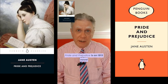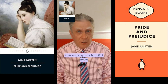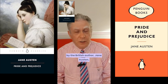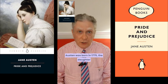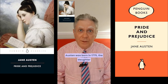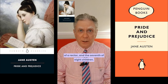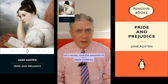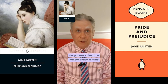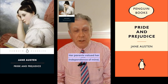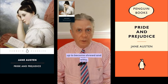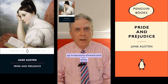Pride and Prejudice is an 1813 novel by the British author Jane Austen. Austen was born in 1775, the daughter of a rector and the seventh of eight children. Her parents valued her independence of mind, with the result that she grew up to become shrewd and witty.